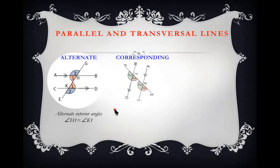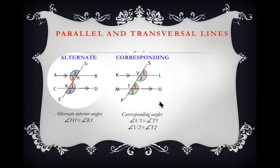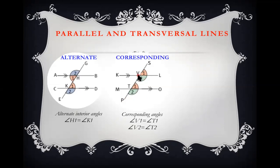Corresponding angles are also formed where we have two parallel lines and a transversal. In a corresponding angle we have an F shape. With lines LV and OT parallel to each other, angle S1 is equal to angle T1, and angle V2 is also equal to angle T2.